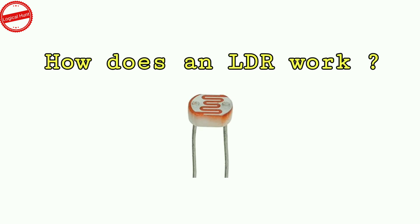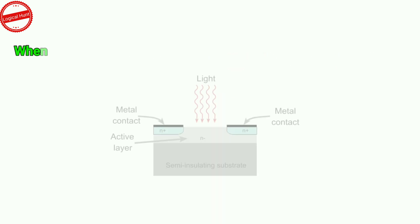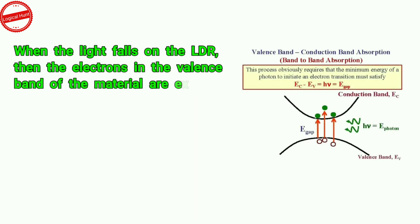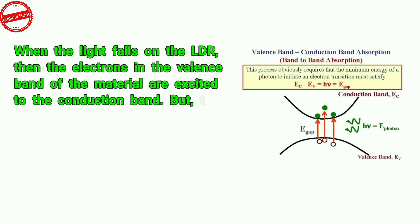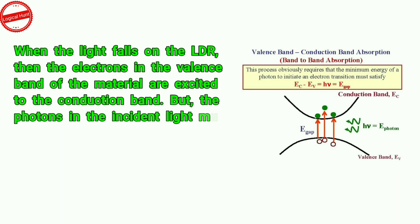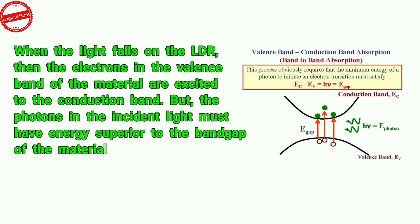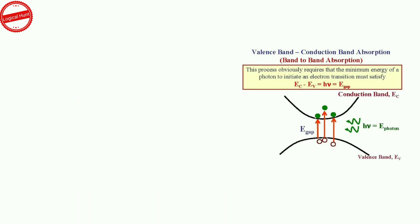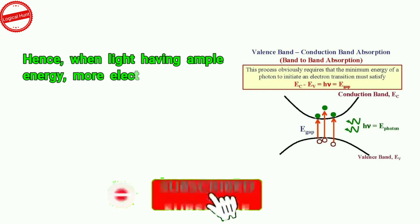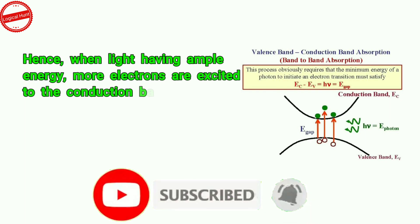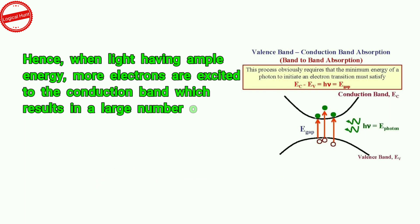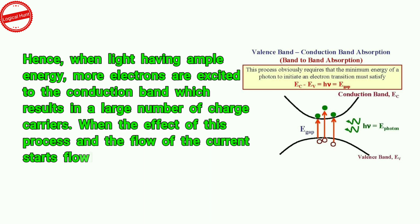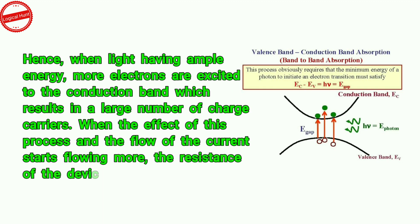How does an LDR work? When light falls on the LDR, the electrons in the valence band of the material are excited to the conduction band. But the photons in the incident light must have energy superior to the band gap of the material to make the electrons jump from the valence band to the conduction band. Hence, when light has ample energy, more electrons are excited to the conduction band, which results in a large number of charge carriers. When the effect of this process causes more current to flow, the resistance of the device decreases.